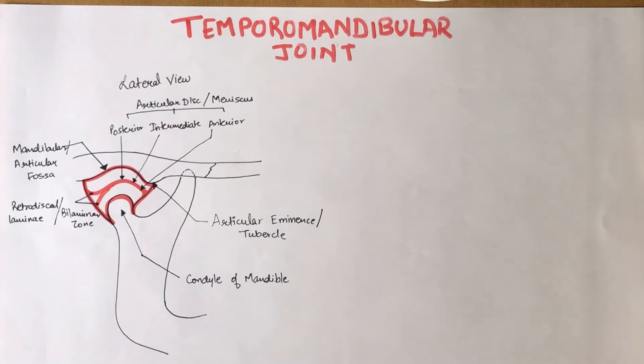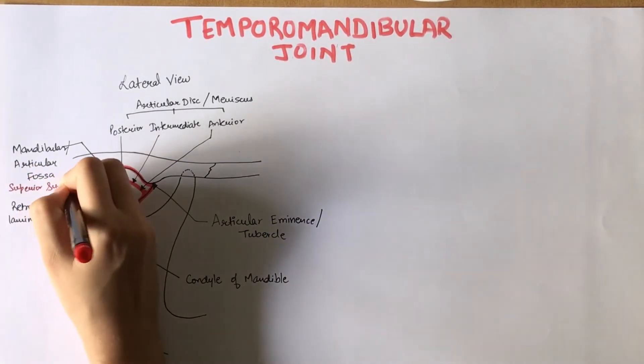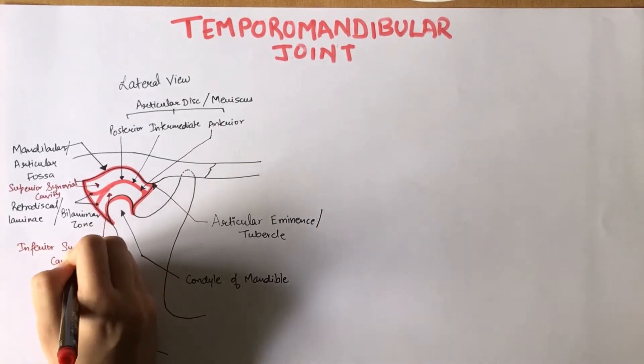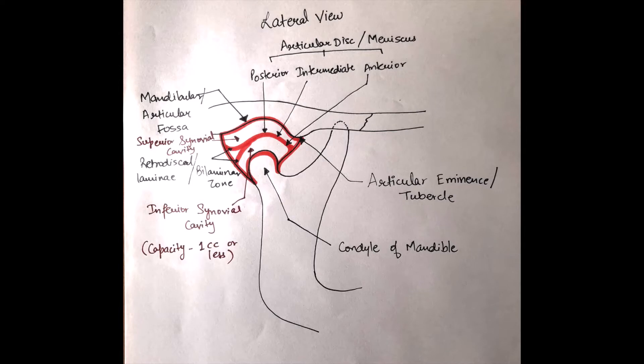The articulating disc divides the joint space into two compartments, the superior synovial cavity and the inferior synovial cavity. The cavity itself is filled with synovial fluid and has a capacity of about one cc or less.